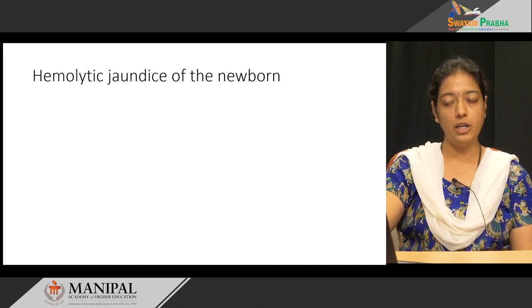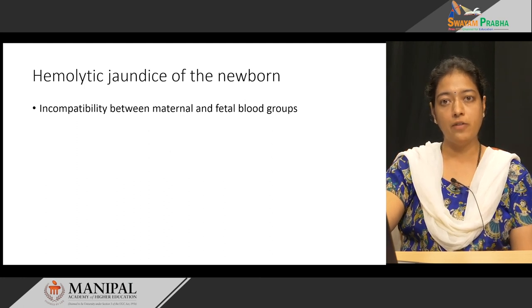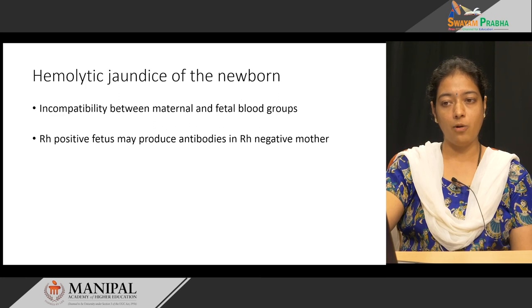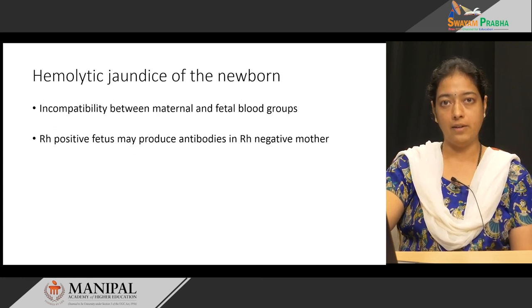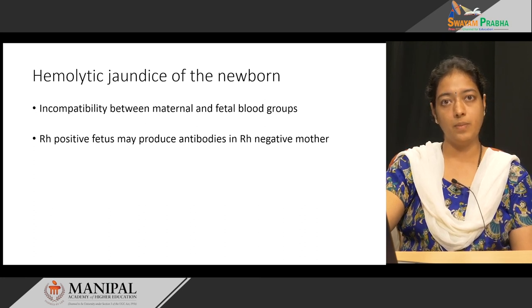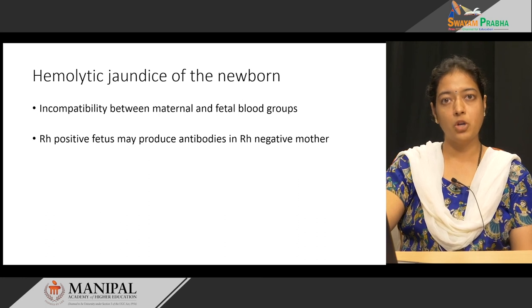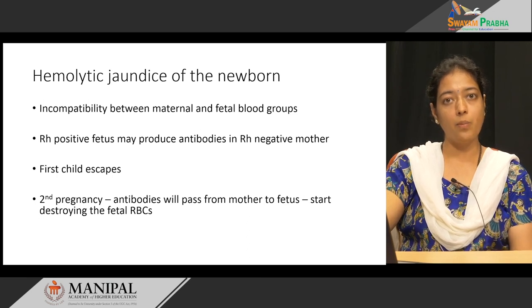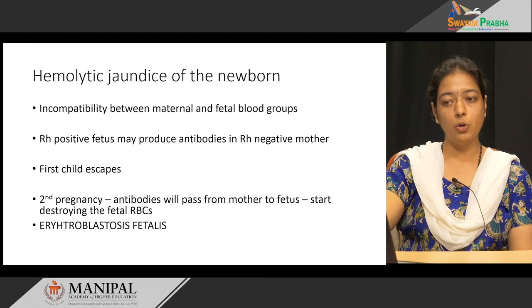Hemolytic jaundice of the newborn is mainly seen when there is incompatibility between maternal and fetal blood groups. Babies typically have RH positive blood, whereas the mother has RH negative blood. During delivery, some RH positive blood enters the mother's circulation, and since the mother is RH negative, she develops antibodies. The first child usually escapes, but during a second pregnancy with an RH positive baby, maternal antibodies pass into the baby and destroy its RBCs, leading to erythroblastosis fetalis.